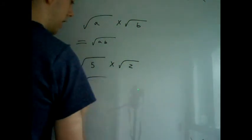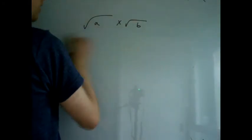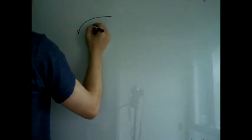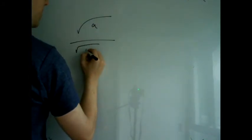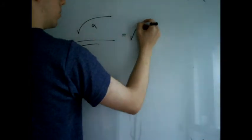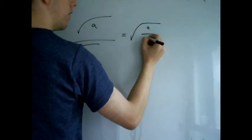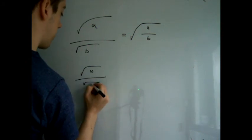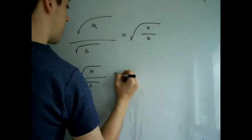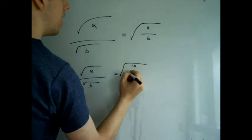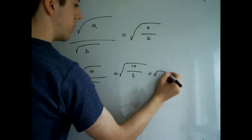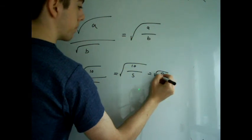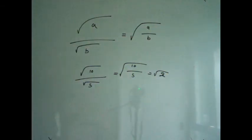Now, simplifying surds which are dividing is just as simple and it's a very similar rule. The square root of A over the square root of B equals the square root all of A over B. In practice, that means the square root of 10 over the square root of 5 equals the square root all of 10 over 5, which equals the square root of 2. Hence, 10 divided by 5 is 2.